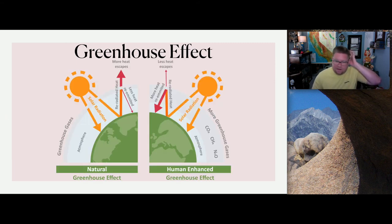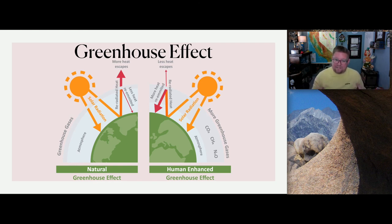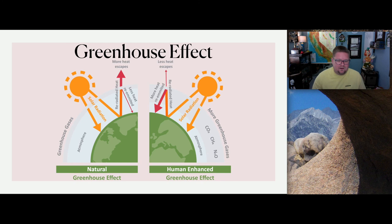That brings me to the greenhouse effect diagram showing natural greenhouse effects versus human-enhanced greenhouse effects. Natural fluctuations happened — there were high CO2 values several thousand years ago, increasing again around the 10,000-year mark. What's important to point out is that we do have additional greenhouse gases — nitrogen oxide, methane, carbon dioxide — that can be natural, but have been produced in volumes not previously seen. There is a direct correlation between human consumption and the production of these gases.